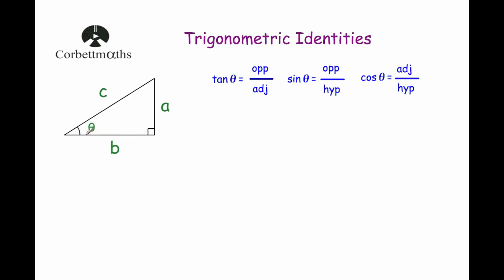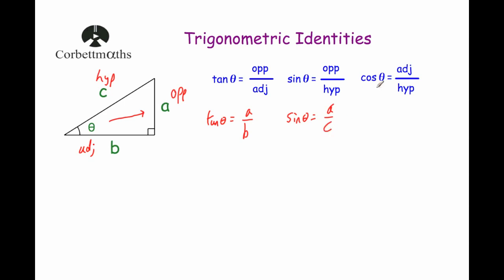Now looking at this triangle, because this is the angle, the side opposite that angle is the opposite. The side opposite the right angle, c, will be the hypotenuse. And the side beside the angle is called the adjacent, so b is the adjacent. Substituting in: opposite is a, hypotenuse is c, and adjacent is b. So tan θ equals a over b, sin θ equals a over c, and cos θ equals b over c.